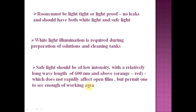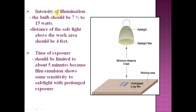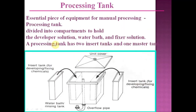White light is required during preparation of solutions and cleaning of tanks. The safe light should be of low intensity with a relatively long wavelength of 600 nanometers and above, in the orange-red region of the spectrum. The bulb should be 7.5 to 15 watts, the distance of the safe light above the working area should be at least four feet from the film, and the time of exposure should be limited to about five minutes, since film emulsion shows some sensitivity to safe light with prolonged exposure.